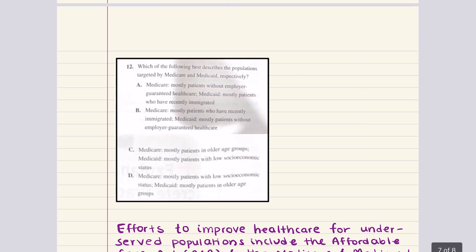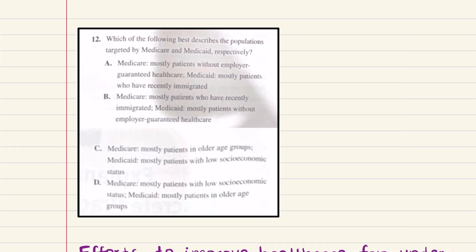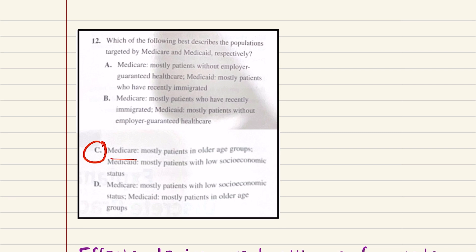Problem twelve asks: which of the following best describes the populations targeted by Medicare and Medicaid respectively? As a reminder, Medicare covers patients over the age of 65 — older age groups — and those with end-stage renal disease and ALS. Medicaid covers patients below a certain socioeconomic level. The correct answer is C: Medicare covers mostly patients in older age groups; Medicaid covers mostly patients with low socioeconomic status.